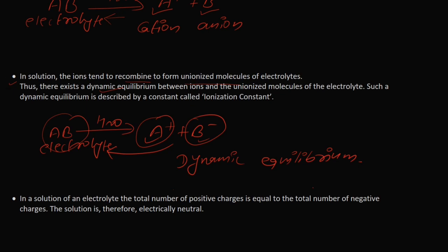This dynamic equilibrium is described by a constant called the ionization constant. K represents the ionization constant. The formula of K for a particular reaction is: K equals the concentration of A⁺ multiplied by the concentration of B⁻, divided by the concentration of the unionized molecule AB. This is the formula to find the ionization constant of any reaction.